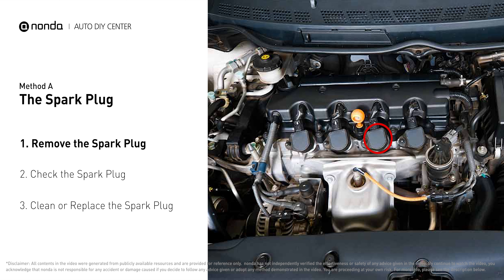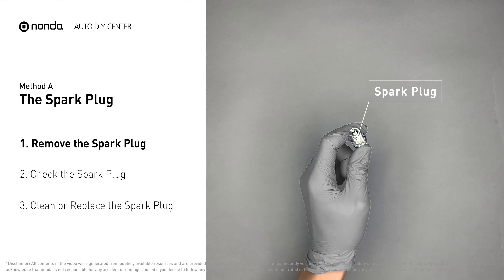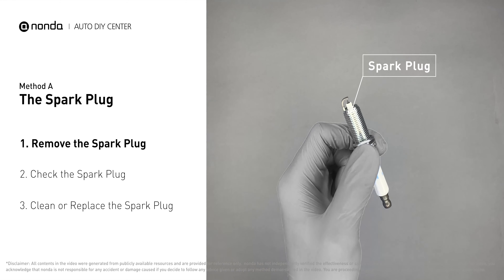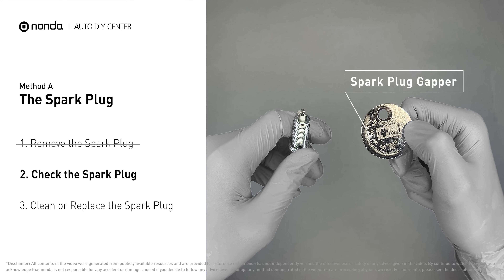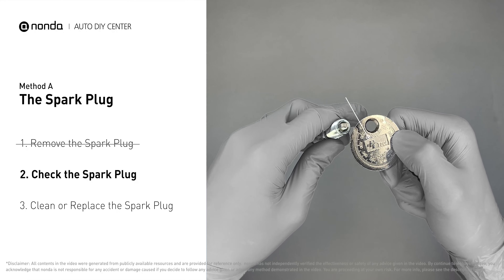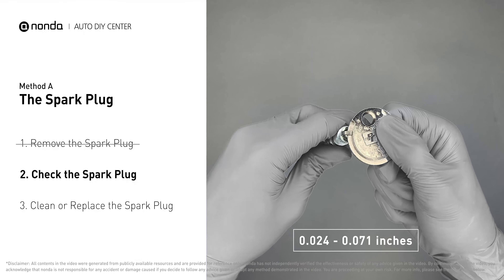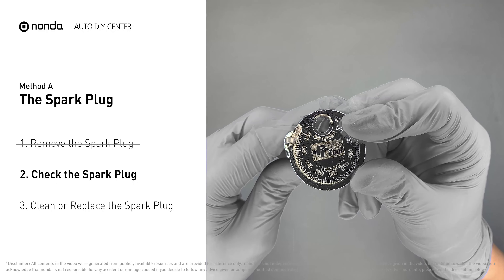The spark plugs are located at the engine end of the wires, under the plug covers that attach them. First, carefully remove the spark plug. Use a spark plug gapper to check the spacing — normally the spacing should be between 0.024 to 0.071 inches.